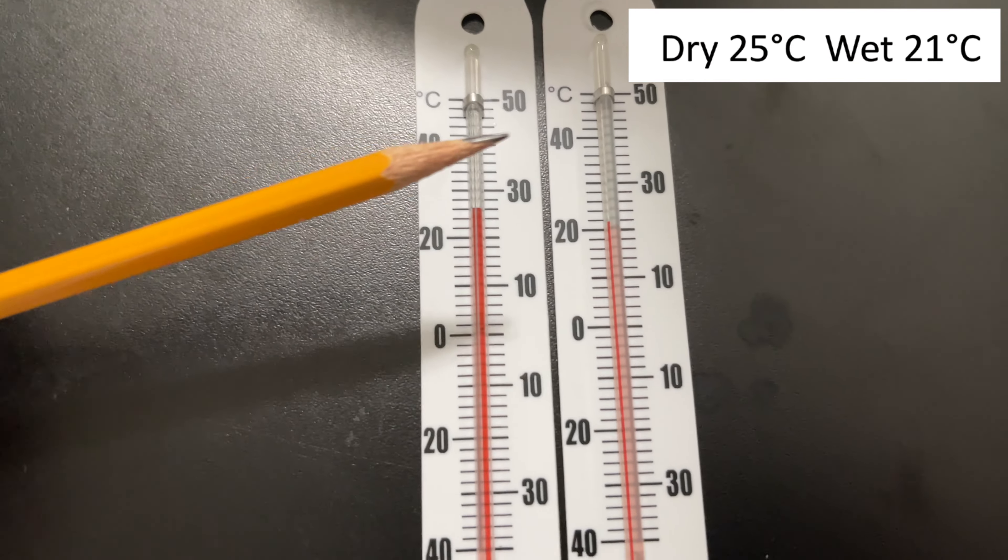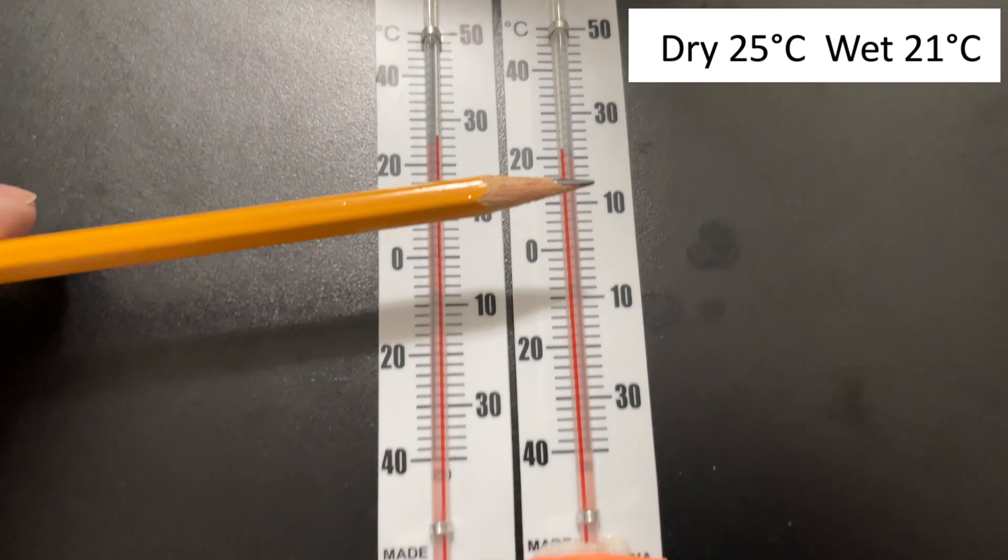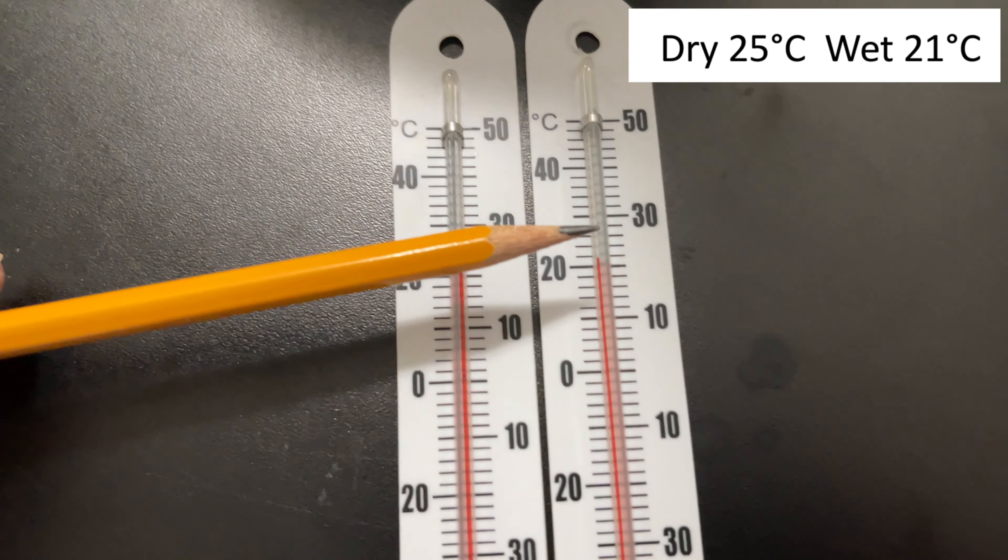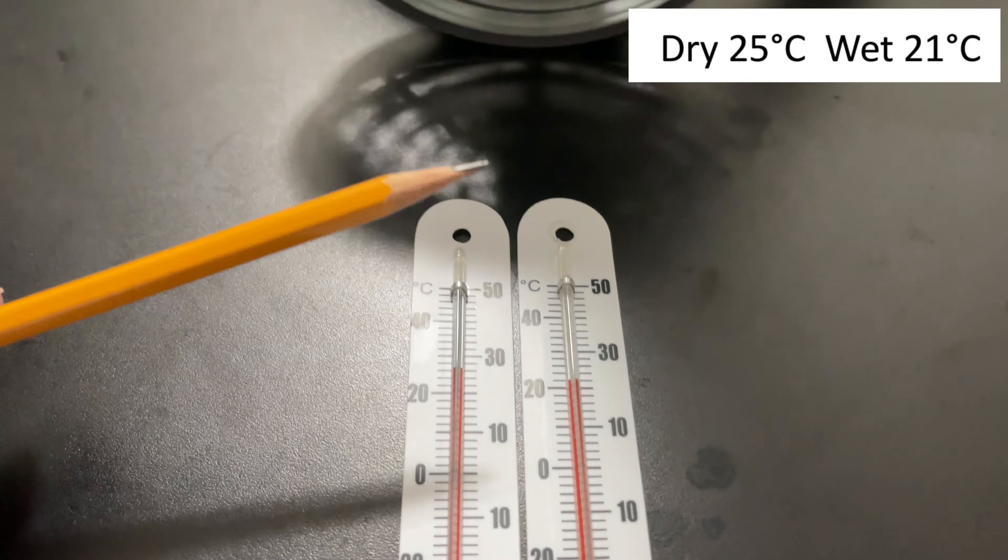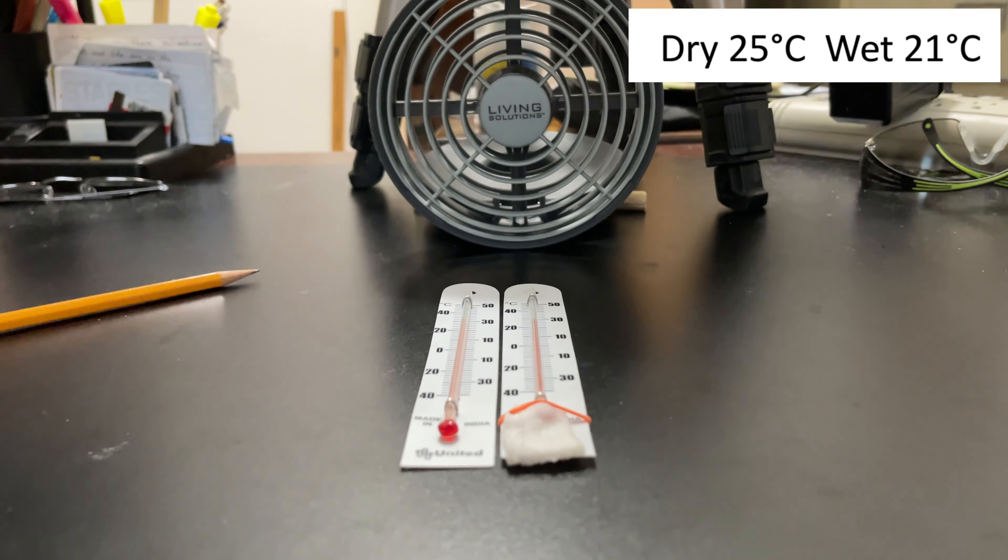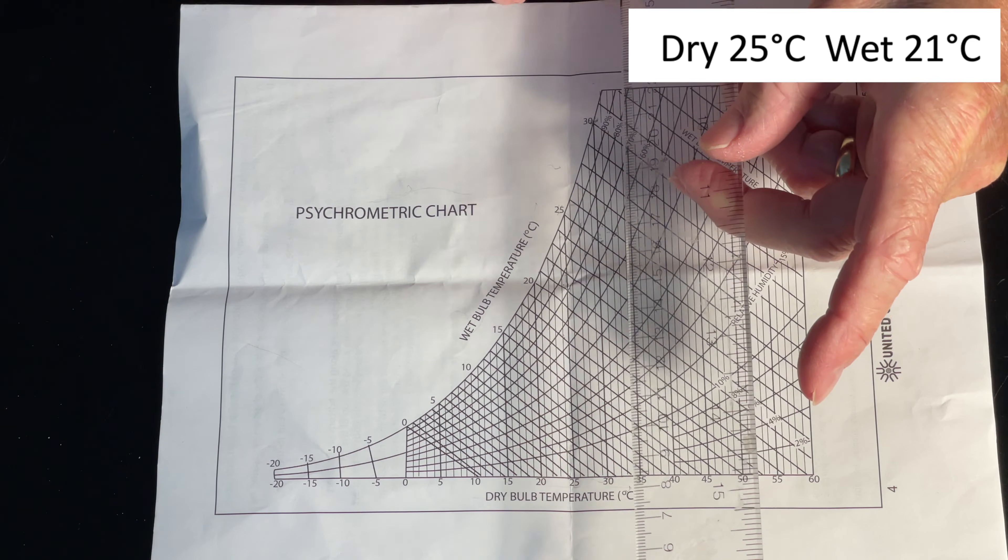This one, the wet bulb one, is reading halfway between 20 and 22, so about 21.